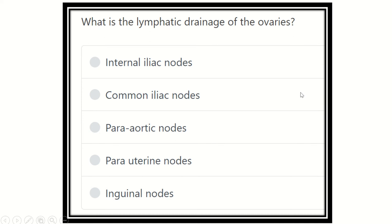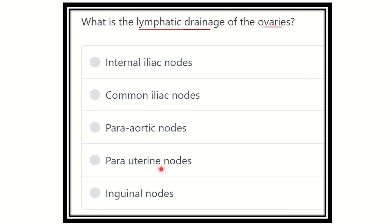Hello everyone, welcome to another lecture regarding MRCS. The question is: what is the lymphatic drainage of the ovaries? The options are internal iliac lymph node, common iliac lymph node, para-aortic lymph node, para-uterine lymph node, and inguinal lymph node. We have to find out which group of lymph nodes the ovary drains into.